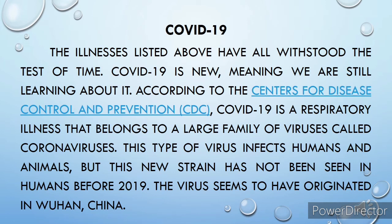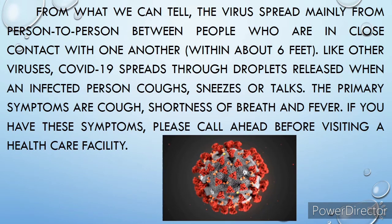COVID-19. The illnesses listed above have all withstood the test of time. COVID-19 is new, meaning we are still learning about it. According to the Centers for Disease Control and Prevention, or CDC, COVID-19 is a respiratory illness that belongs to a large family of viruses called coronaviruses. This type of virus infects humans and animals, but this new strain had not been seen in humans before 2019. The virus seems to have originated in Wuhan, China. The virus spreads mainly from person to person, between people who are in close contact within about 6 feet. Like other viruses, COVID-19 spreads through droplets released when an infected person coughs, sneezes, or talks. The primary symptoms are cough, shortness of breath, and fever. If you have these symptoms, please call ahead before visiting a healthcare facility.